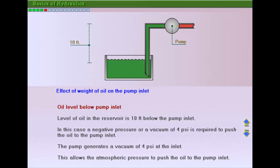Here, a negative pressure, or vacuum, equivalent to 4 psi, is required to push oil to the pump inlet. The pump must generate a vacuum of 4 psi at the inlet to allow atmospheric pressure to push the oil to the pump inlet.